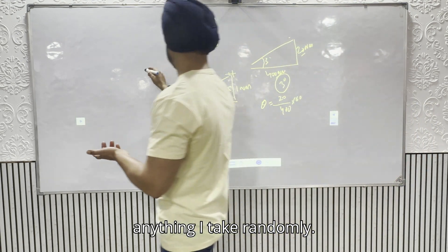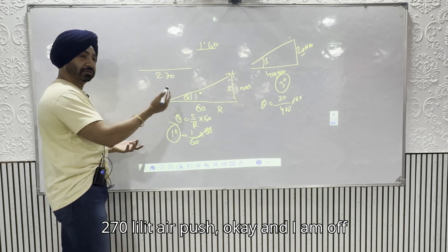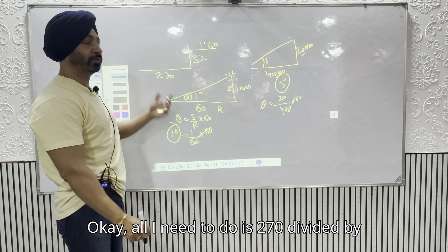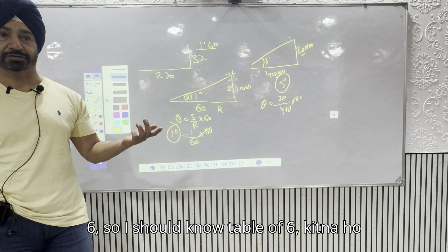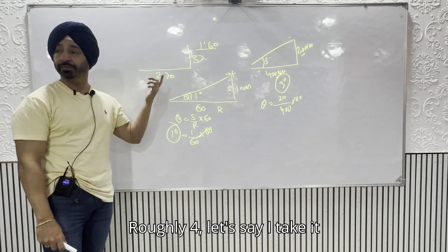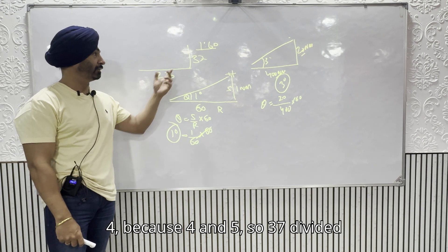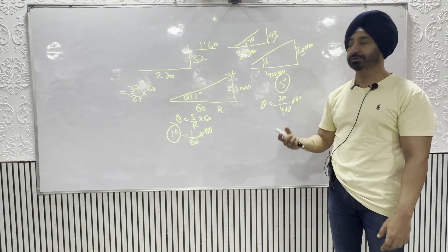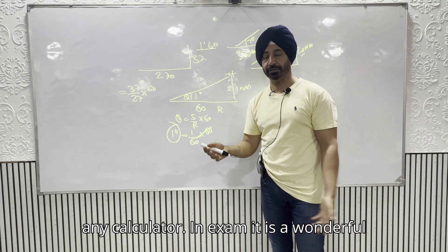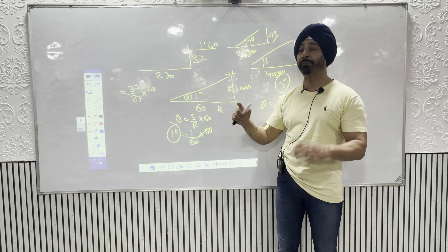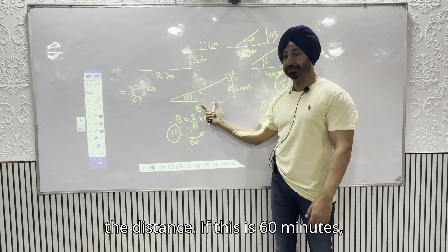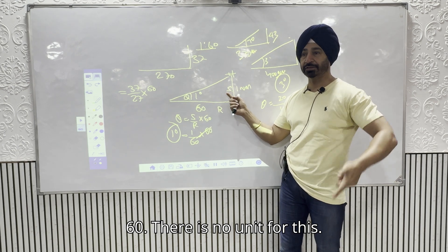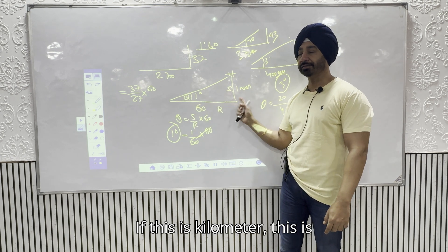This rule holds for any unit — minutes, feet, kilometres — because it's a ratio of 1-to-60; there are no specific units. Whether the distance is in kilometres or nautical miles, the ratio applies equally.